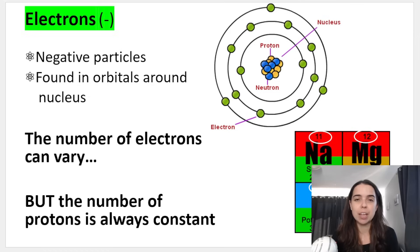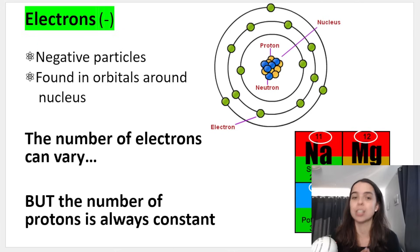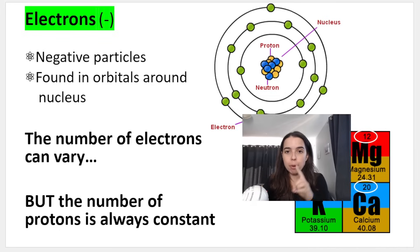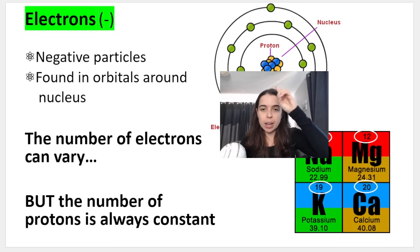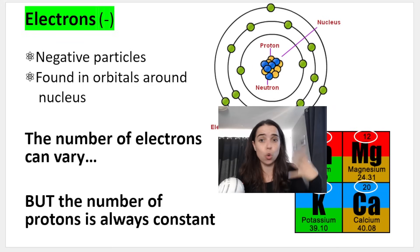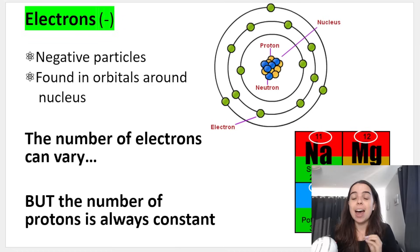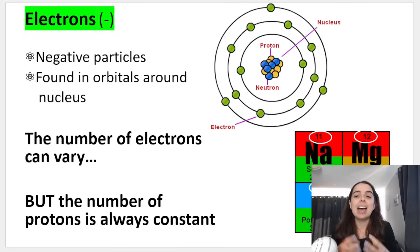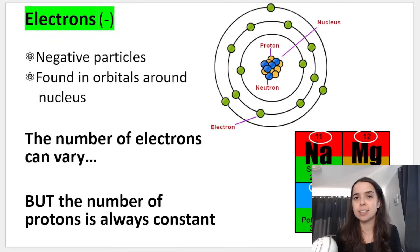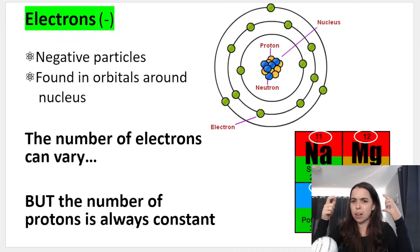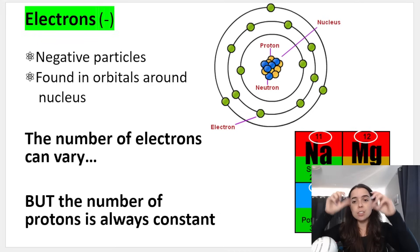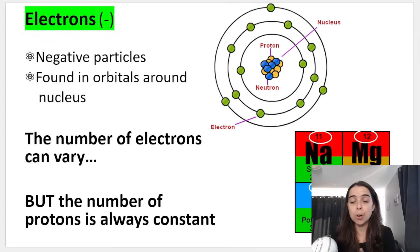The number of electrons can vary, but the number of protons is always constant. Think of it this way: protons are in the center — they're not going anywhere. An atom cannot gain or lose protons. However, because electrons are on the outside in the orbitals, an atom can gain or lose electrons, and this happens during bonding. You also learned about this in electrostatics in physics, where electrons can move from one object to another through friction.